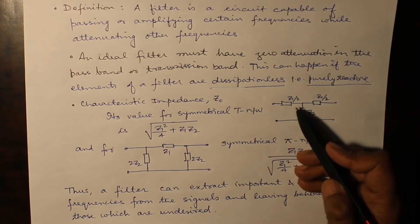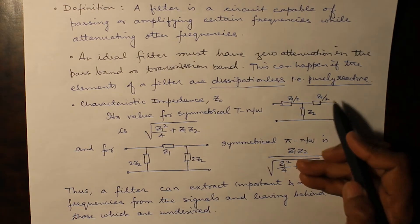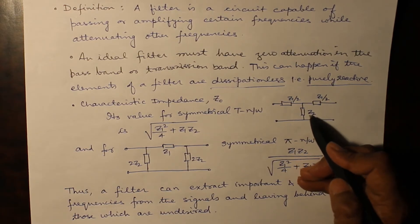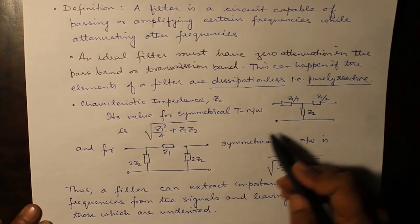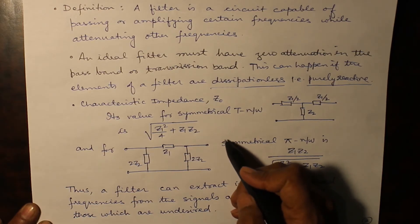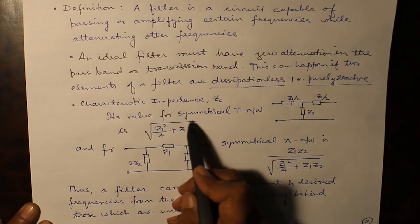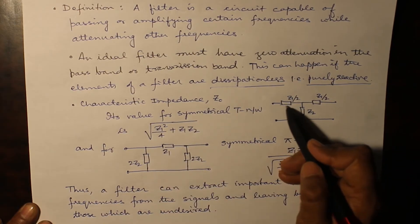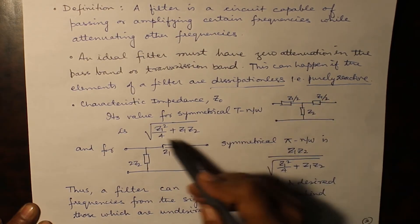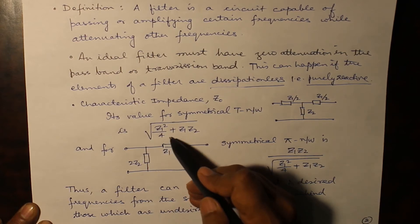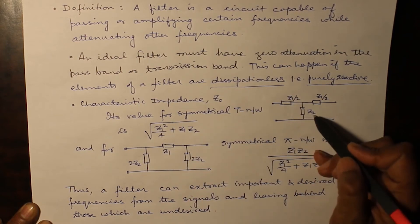For a symmetrical T network in which there is Z1 by 2, Z1 by 2 and Z2, the value for symmetrical T network can be calculated. It is equal to square root of Z1 square by 4 plus the product of Z1 Z2.